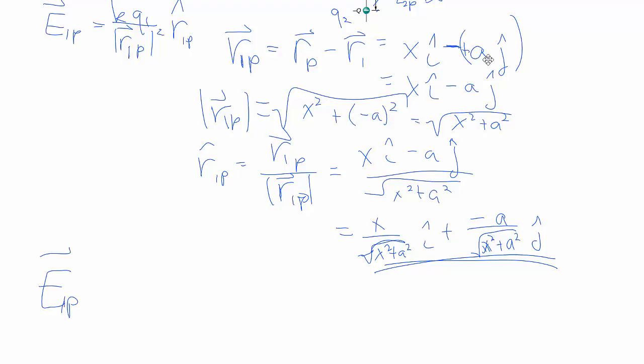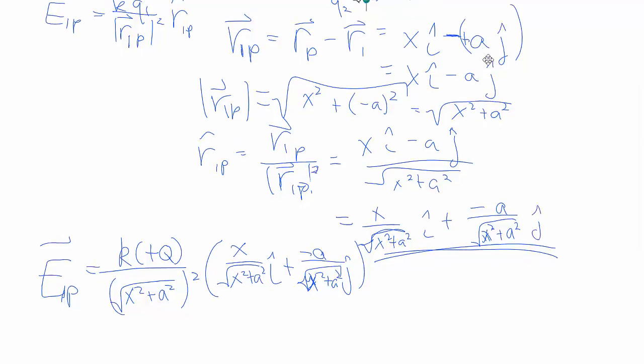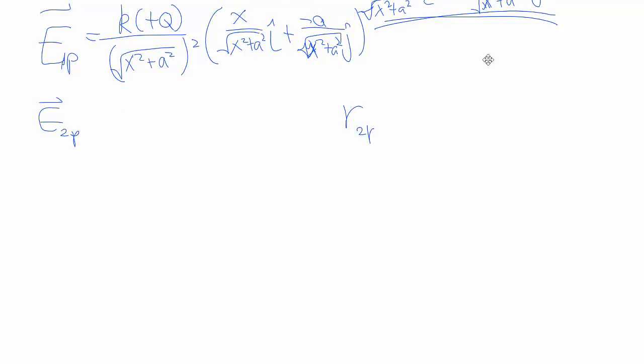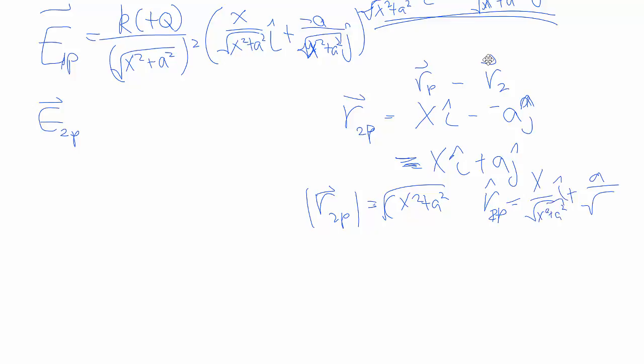Subbing all in, we get E_1P equals KQ over (x² + a²) times the unit vector, which is somewhat lengthy. Very similarly, if you follow through the same line of reasoning for E_2P, we need to find the displacement vector. In this case, we have r_P minus r_2, and r_2 is negative a j-hat. When we subtract the negative, we end up with a positive, which makes sense because to get from point 2 to point P, we have to go up in the y and go to the right with the x. We do the same thing again, find the magnitude which is √(x² + a²), and the unit vector follows very similarly. Subbing that in, you get K times negative Q over all that stuff.